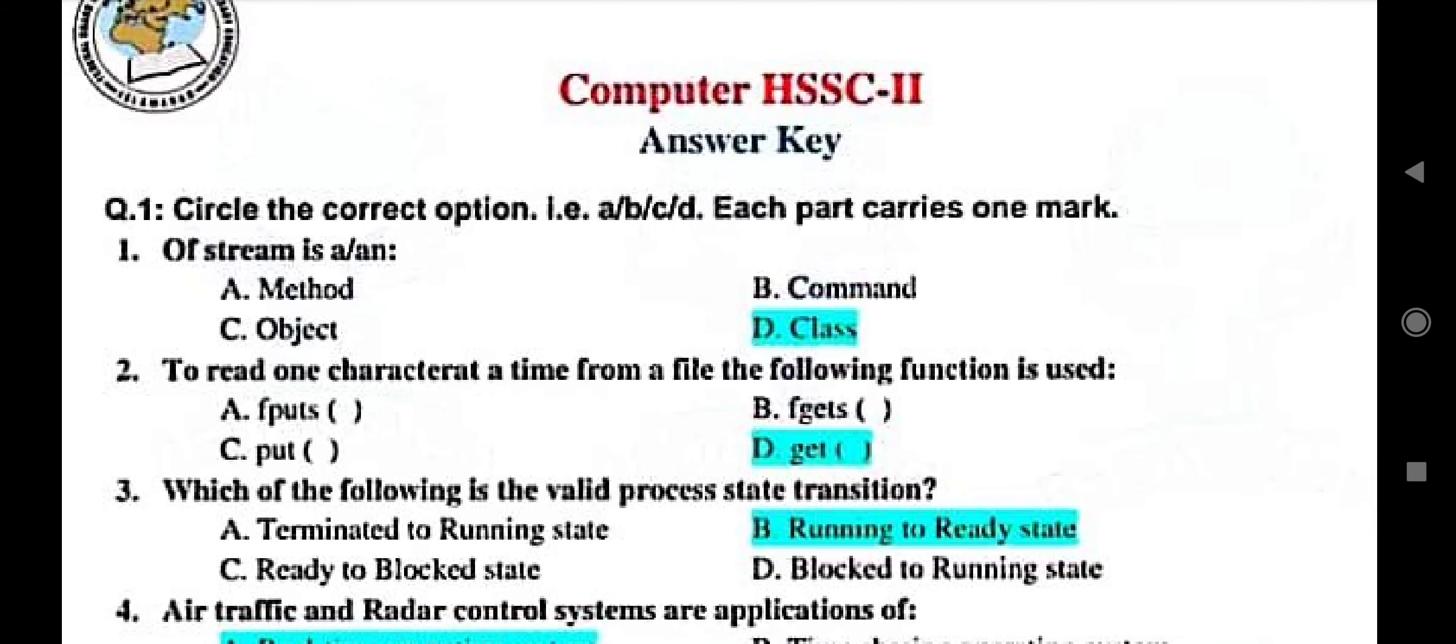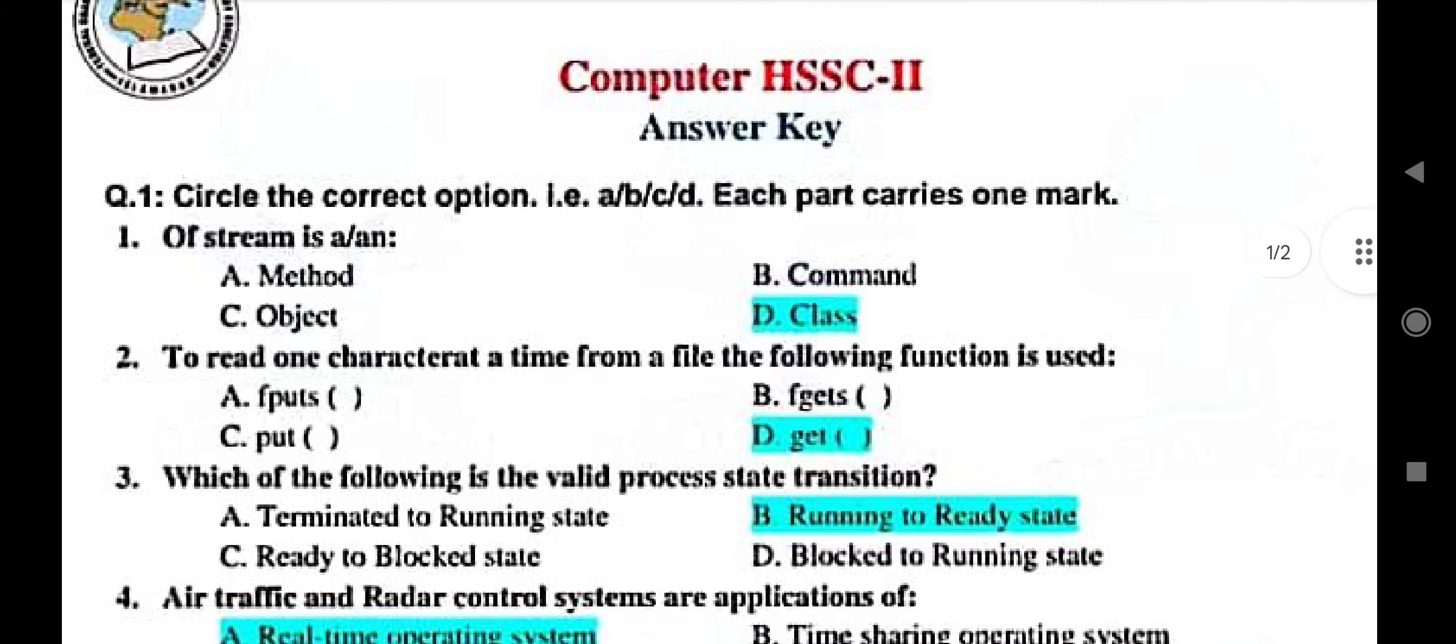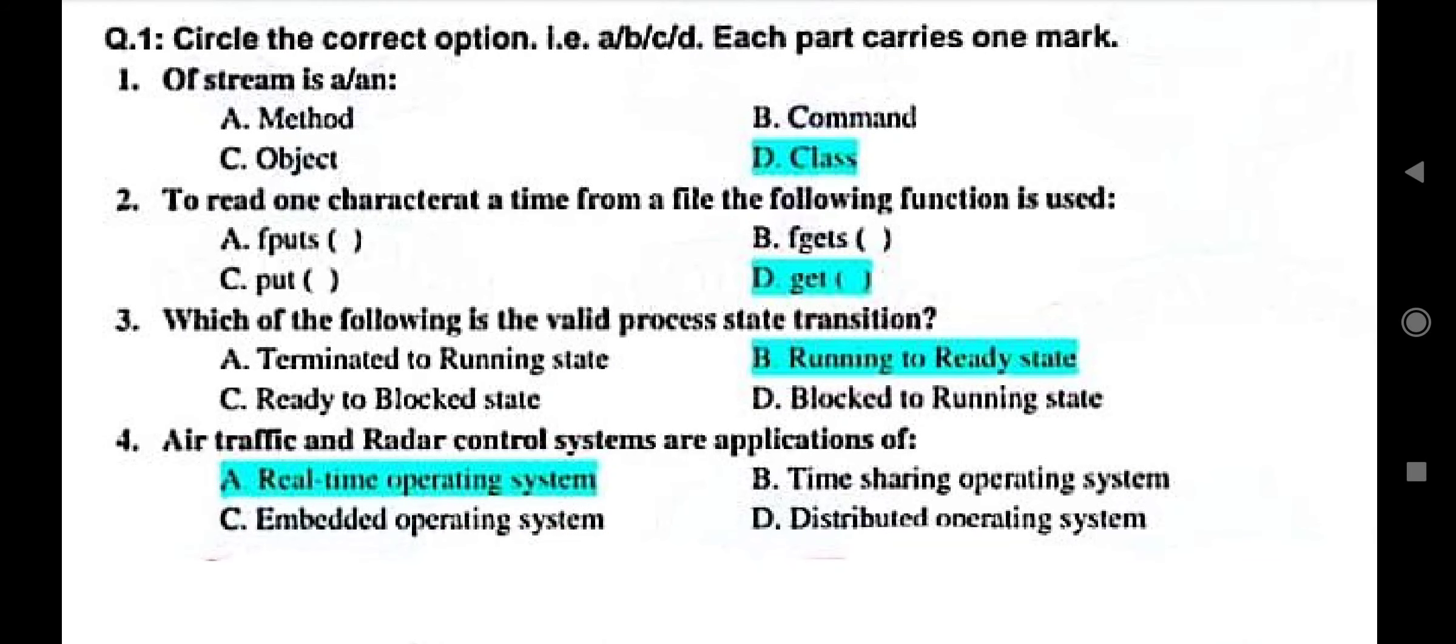The first question was that off stream is, correct option that it is a class. Then to read one character at a time from a file, the following function is used. So that is option D is the correct option.